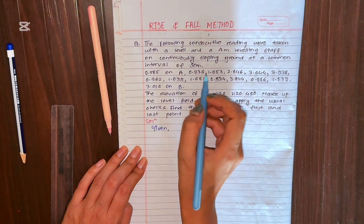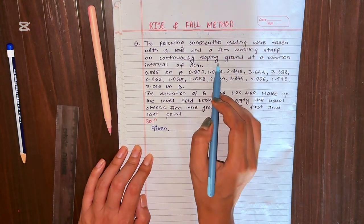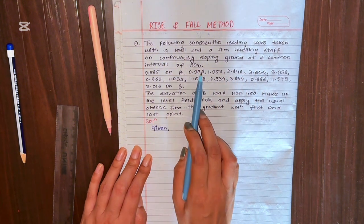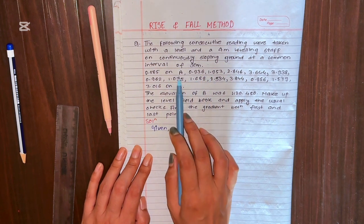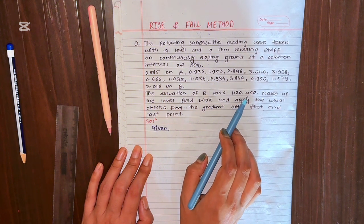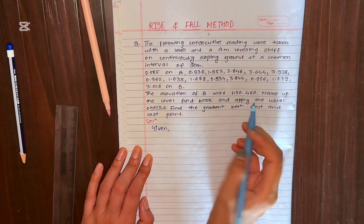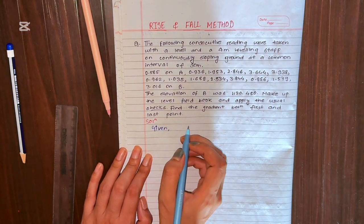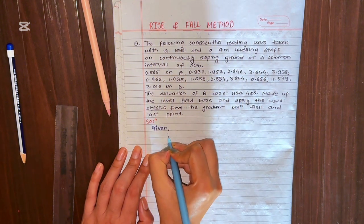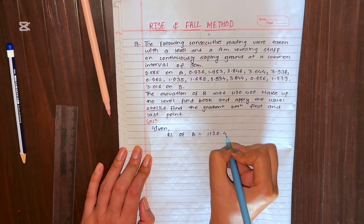The problem states: a 4-meter leveling staff on continuously sloping ground at a common interval of 30 meters. These are the staff readings taken. The elevation of B is given as 1120.450 meters. We need to make up a level field book, apply the usual check, and find the gradient between the first and last point.